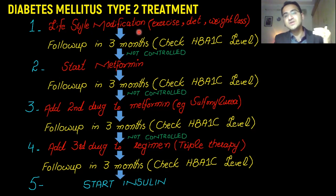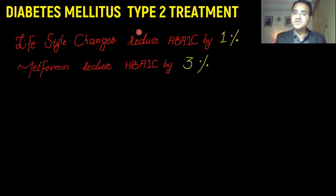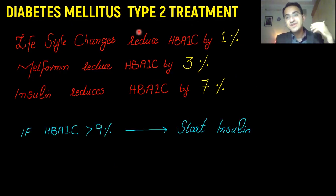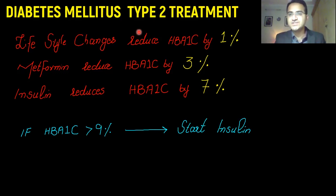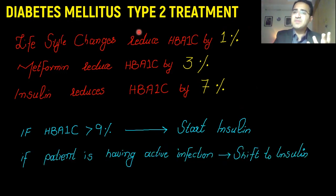Lifestyle changes can reduce HbA1c level by one percent, metformin can reduce HbA1c by three percent, and insulin can reduce HbA1c level by seven percent. So if a patient initially presents with an HbA1c level greater than nine percent, their sugar cannot be controlled with lifestyle modifications or medication alone. For initial control of that high glucose level, you have to start insulin and then shift the patient to medication.